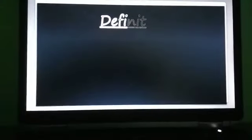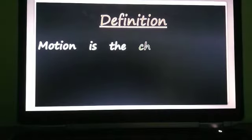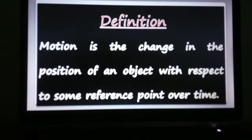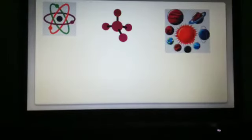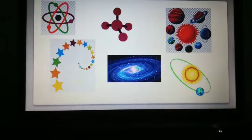Therefore, to describe the position of an object, we need to specify a reference point called the origin. The proper definition of motion is: motion is the change in the position of an object with respect to some reference point over time. To describe motion, we need two key terms: change in position and reference point. Atoms, molecules, planets, stars, galaxies, the sun, and the earth — all these are examples of motion.